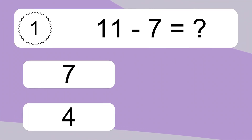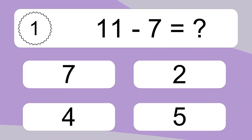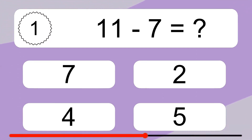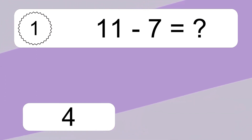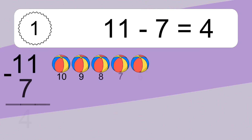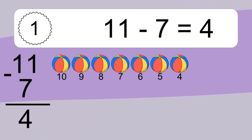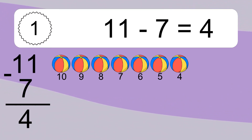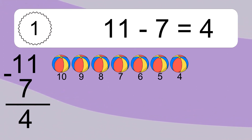11 minus 7 equals what? 11 minus 7 equals 4. Let's count it: 10, 9, 8, 7, 6, 5, 4.